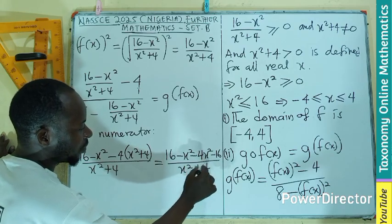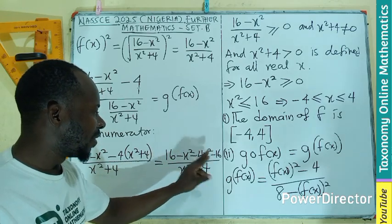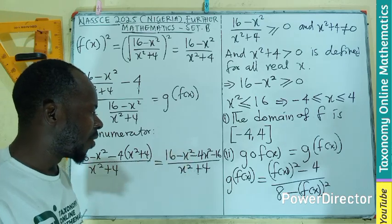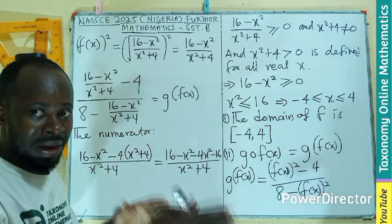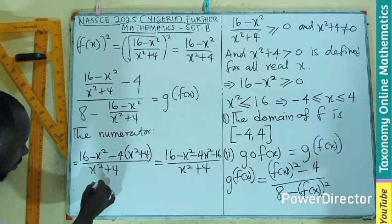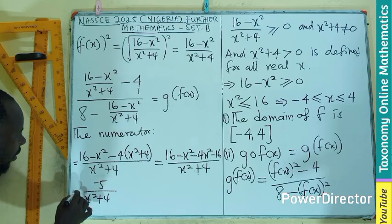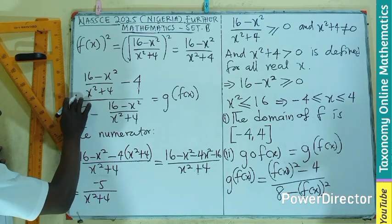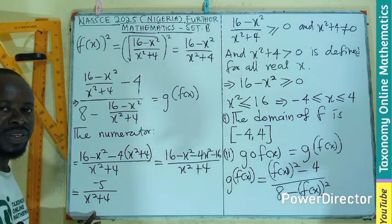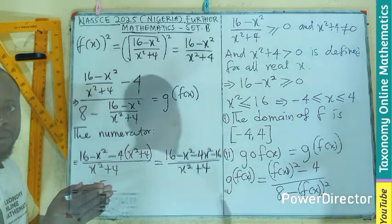So the numerator simplifies to negative 5x² divided by x² plus 4. The 16 and negative 16 cancel, and negative 1 minus 4 gives negative 5, confirming we get negative 5x² over x² plus 4 for the numerator expression.